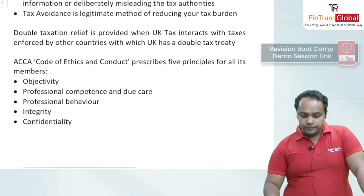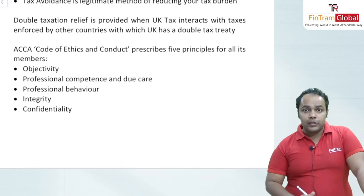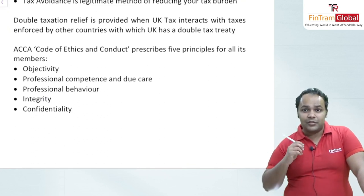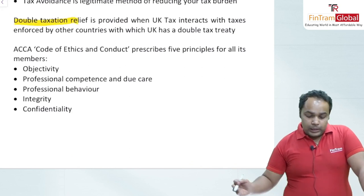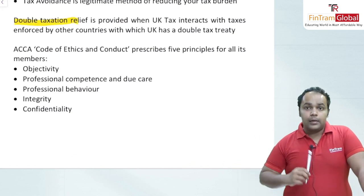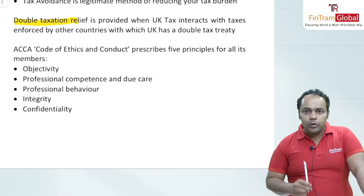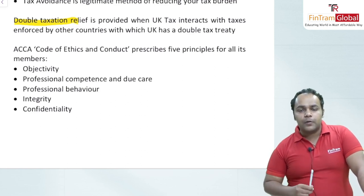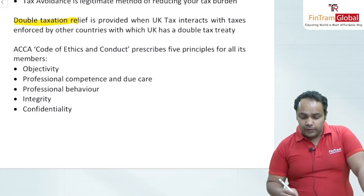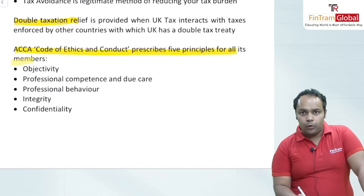We learned that the HMRC administers the UK Tax system. We learned about the overall structure of the tax administration system and the three main sources of UK Tax law: HMRC guidance, statute and case law. We also learned the difference between tax evasion and tax avoidance — a very important topic that will be tested in the exam. We also covered double taxation relief and the ACCA code of ethics and conduct.